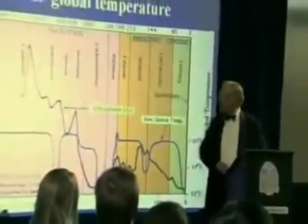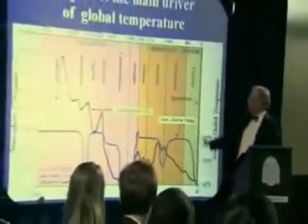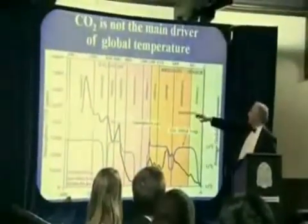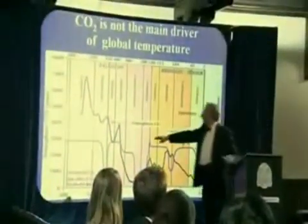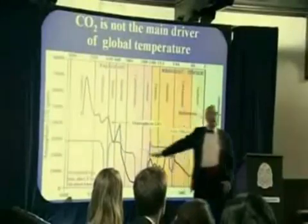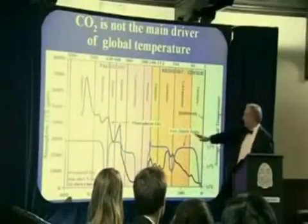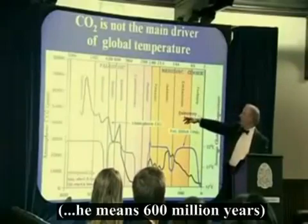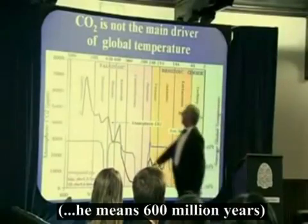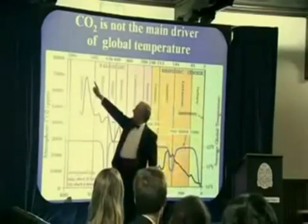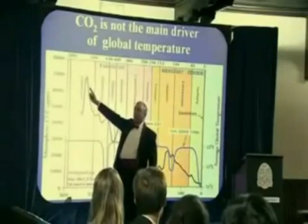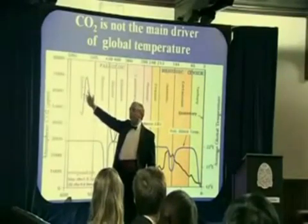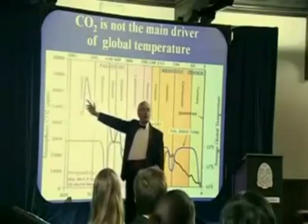Moving to the next slide, we get a rather prodigious mismatch between CO2 concentration, which is the black line, and temperature concentration, which is the blue line, going right back to almost 600,000 years into the past. Here we had almost 7,000 parts per million of CO2 compared with 385 or thereby today.